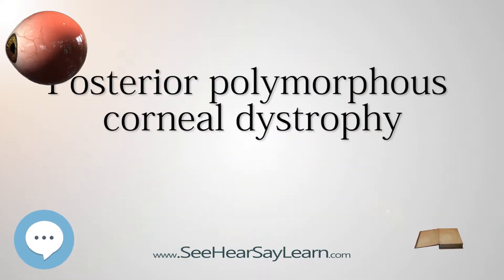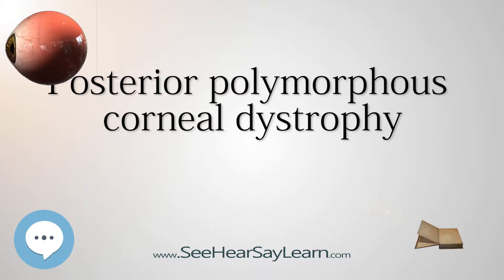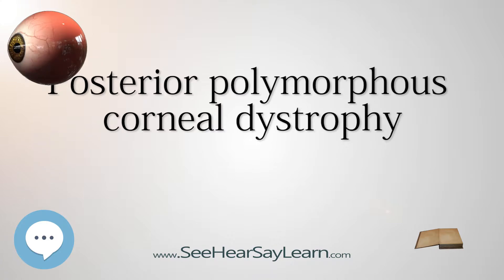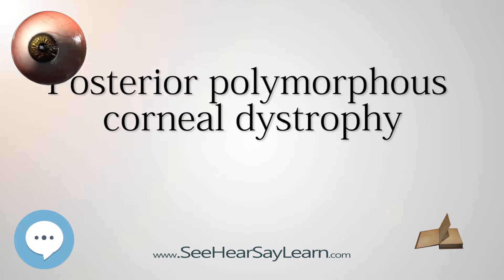Posterior polymorphous corneal dystrophy, PPCD, sometimes also called Schlichting dystrophy, is a type of corneal dystrophy characterized by changes in Descemet's membrane and endothelial layer. Symptoms mainly consist of decreased vision due to corneal edema. In some cases they are present from birth, while other patients are asymptomatic.